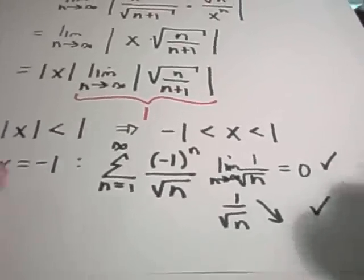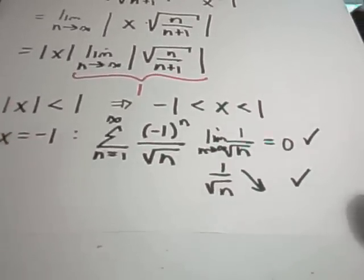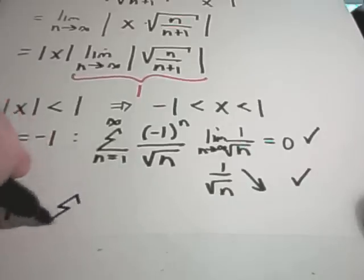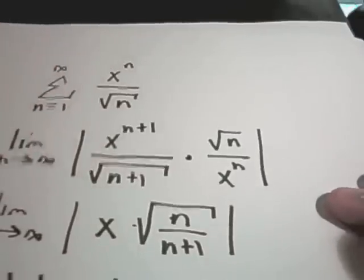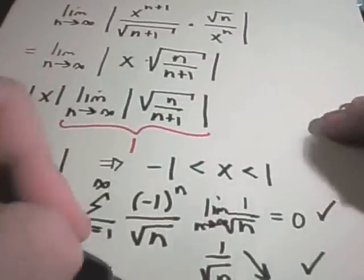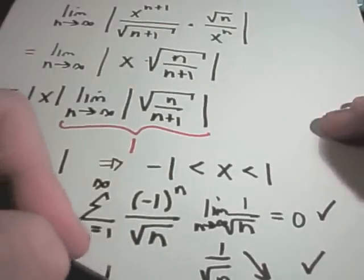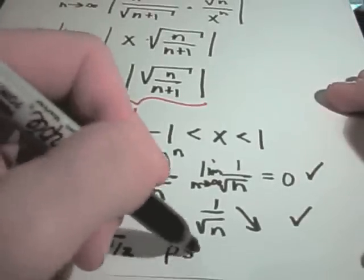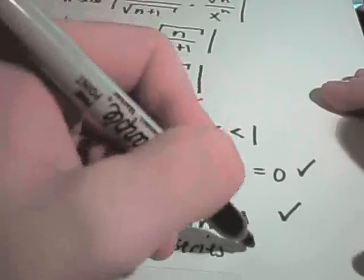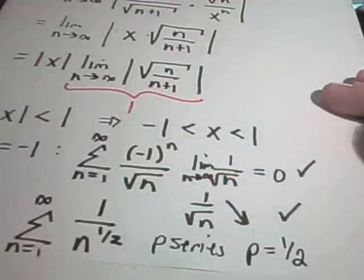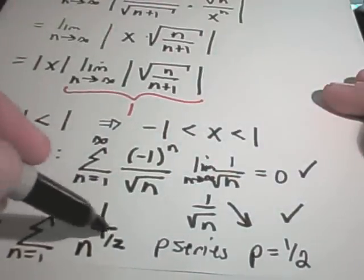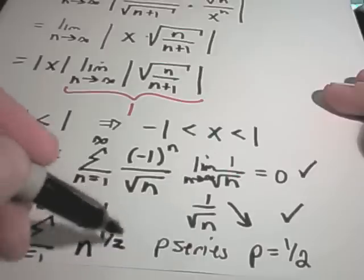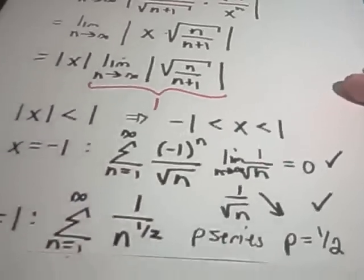We also have to check x equals positive 1. For x equals positive 1, we get the summation from n equals 1 to infinity of 1 to the n over square root of n — but 1 to any power is just 1 — so we get 1 over square root of n, which I'll write as n to the 1/2 power. This is now a p-series with p equals 1/2. For a p-series to converge, the power must be greater than 1, so this series does not converge for x equals 1.